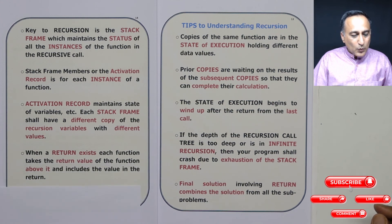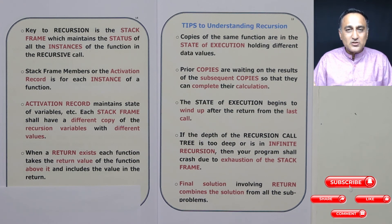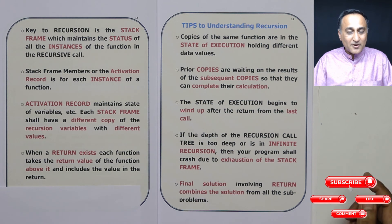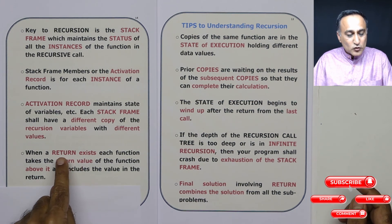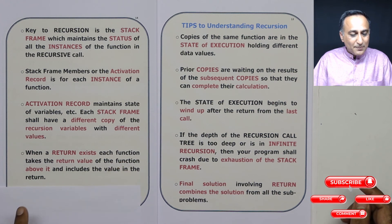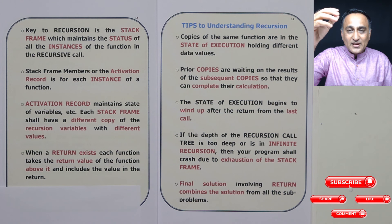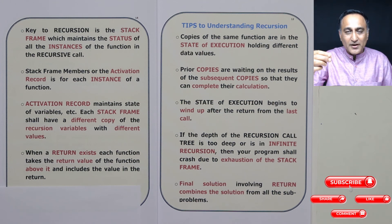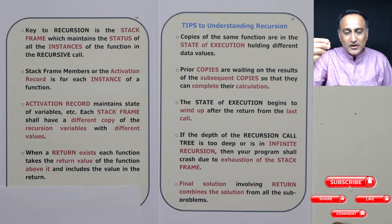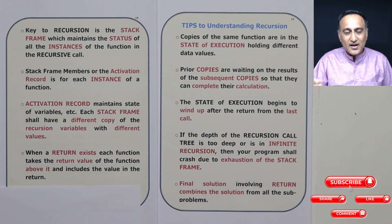Not all recursions necessarily need a return call. For example, printing numbers in sequence and in reverse did not have a return in the recursion call, but factorial and sum of numbers did. If a return exists, then each function gives its return value to the function above it — factorial of 1 gives its return value to factorial of 2, factorial of 2 gives its to factorial of 3, factorial of 3 to factorial of 4, and factorial of 4 to factorial of 5.